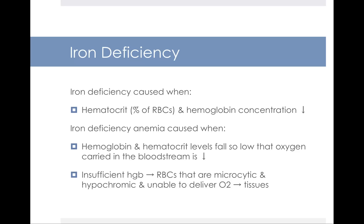If you have insufficient hemoglobin, this leads to red blood cells that are microcytic and hypochromic — small in size, which is microcytic, and light in color, which is hypochromic. As a result, these small, light-colored red blood cells are unable to deliver oxygen to your tissues.